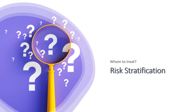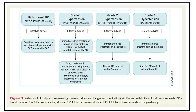Before starting treatment, we must stratify risk. According to the ACC guideline, all grades — high normal, Grade 1, 2, and 3 — start with lifestyle advice. Grade 2 and 3 require immediate drug initiation. For Grade 1 hypertension, drugs should be started immediately if there is very high cardiovascular risk, existing CVD, renal disease, or hypertension-mediated organ damage. If risk is low or moderate without these comorbidities, a lifestyle modification trial for three to six months is appropriate.